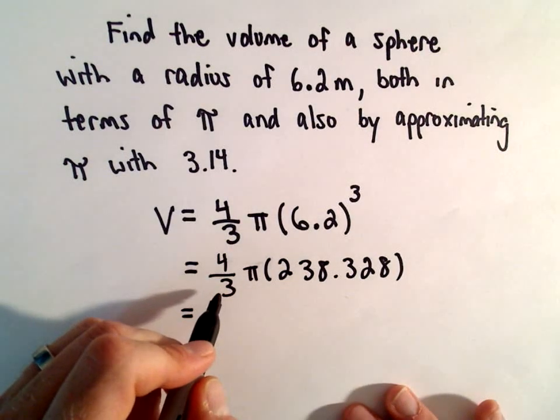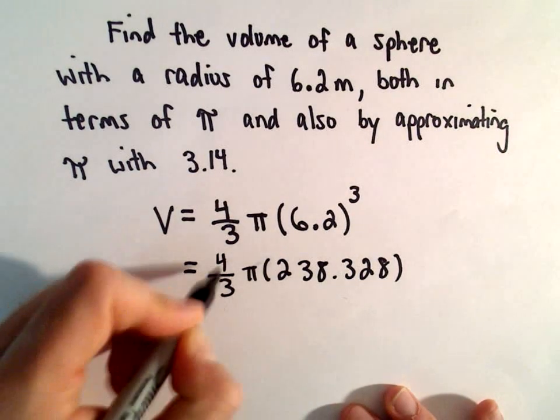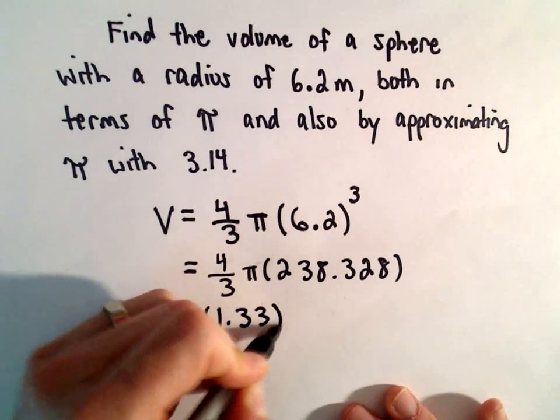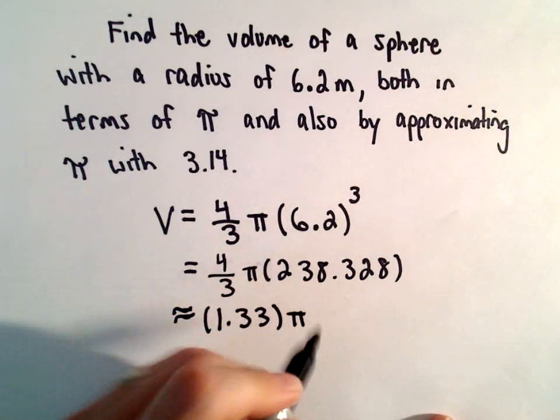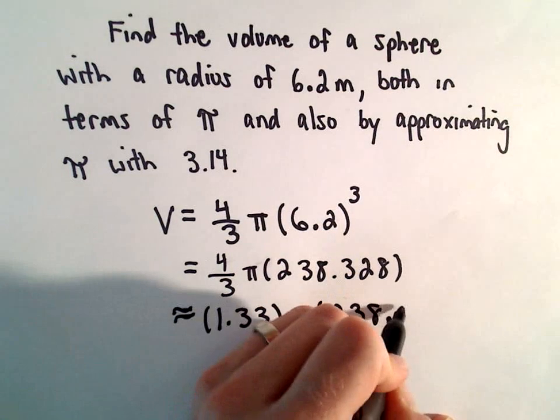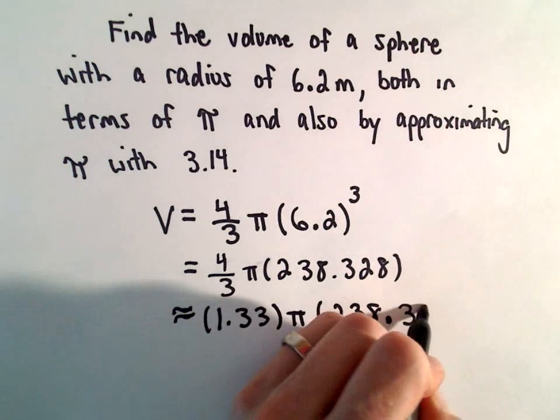Four-thirds is 1.333 repeating. So this is now going to be approximately equal to 1.333, we still have pi in there, and then we've got 238 point, if we round to the nearest hundredth we'll have 238.33.